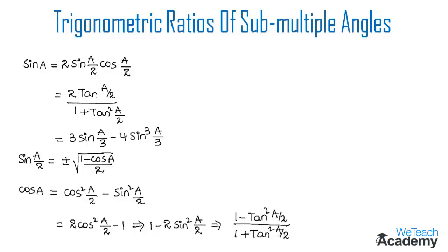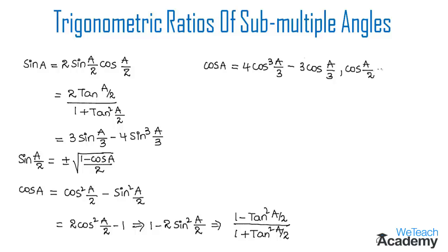Now let me explain the formula where the multiple of A is a fraction like 1/3. So here we can write cos A equal to 4 cos cubed(A/3) minus 3 cos(A/3). And the formula for the submultiple angle A/2: cos(A/2) will be equal to plus or minus under root of (1 plus cos A) divided by 2.